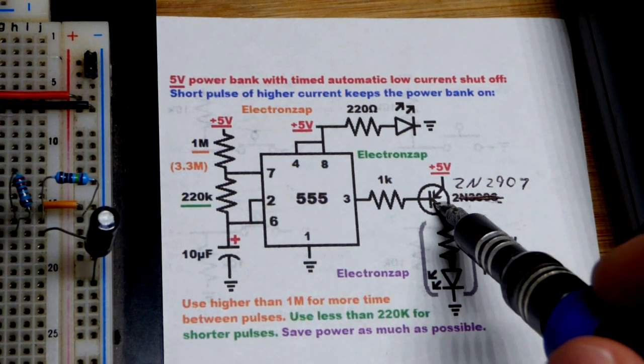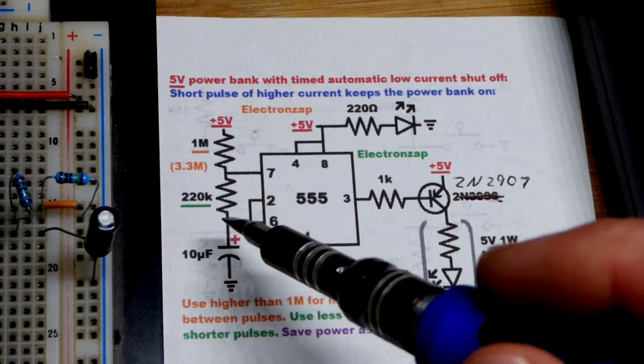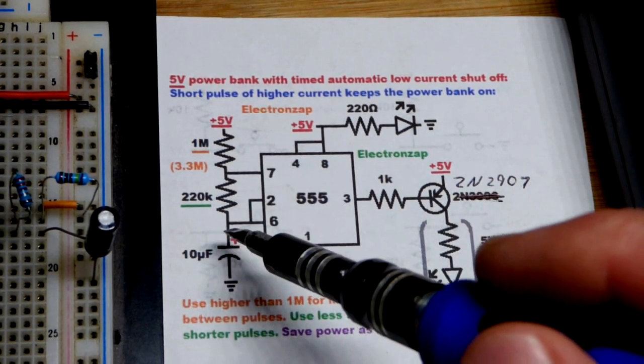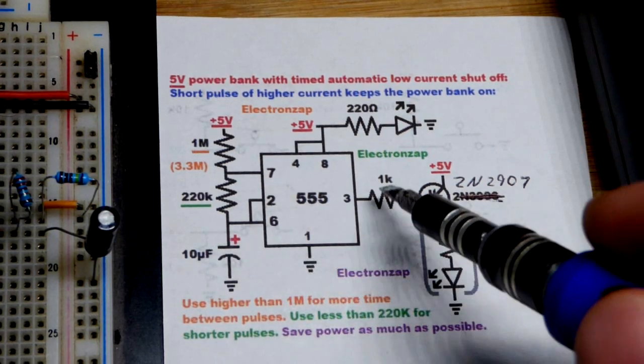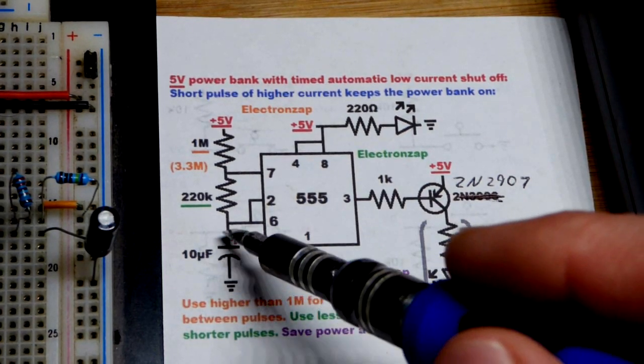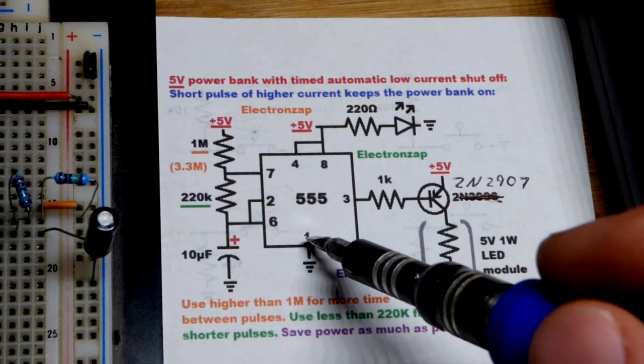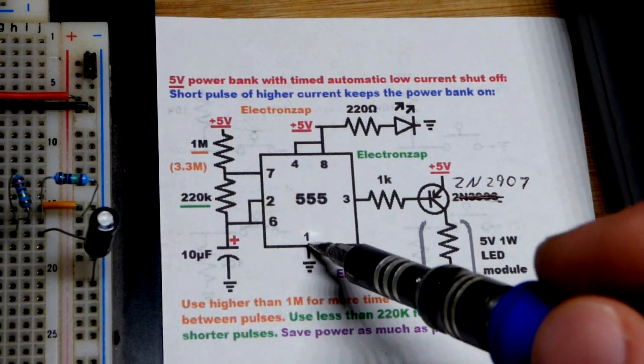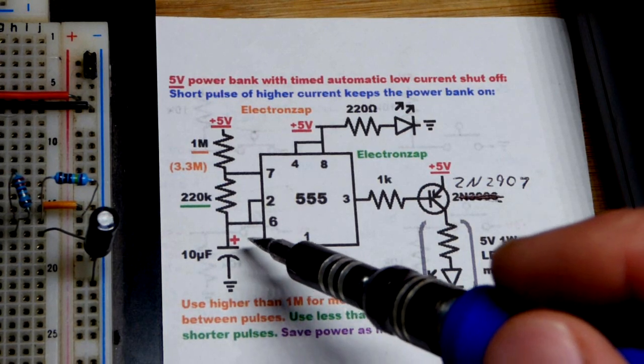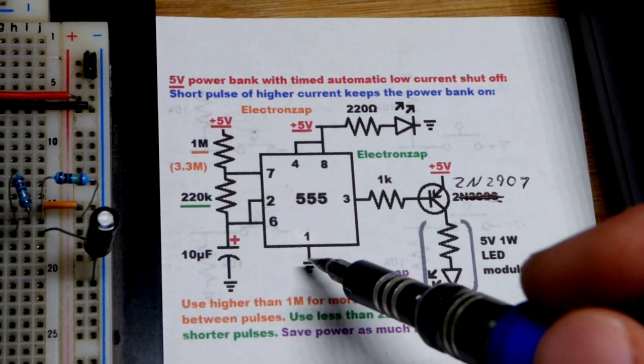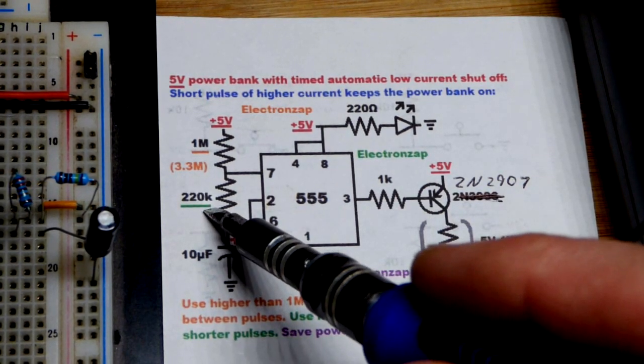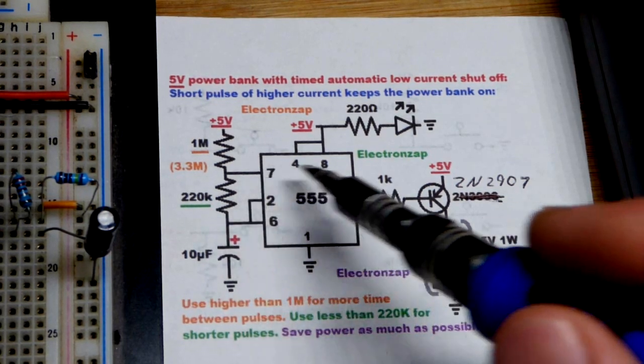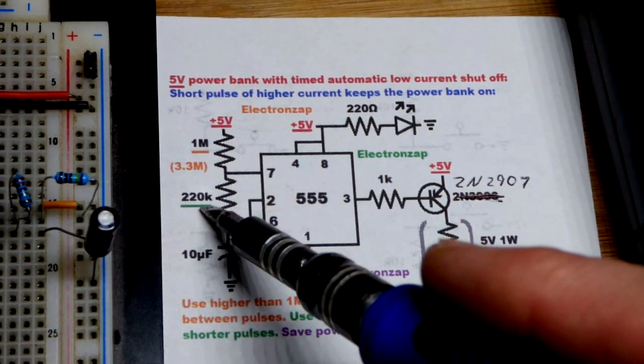We're keeping it high for a relatively long period of time that keeps the PNP bipolar junction transistor off. Once the capacitor gets to two-thirds supply voltage, so you can adjust these values, then the output's going to go low and the capacitor is going to discharge through that 220k resistor. So we want it to discharge faster because we just want a brief flash.